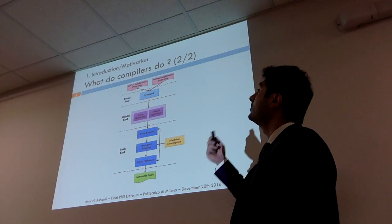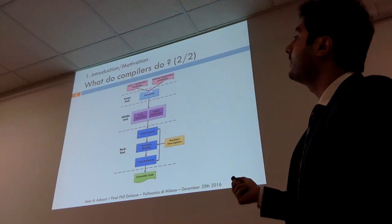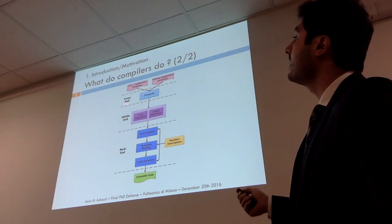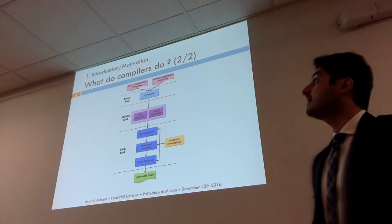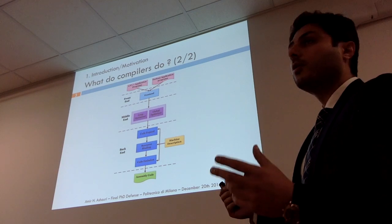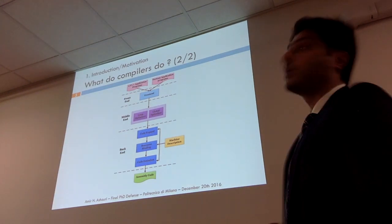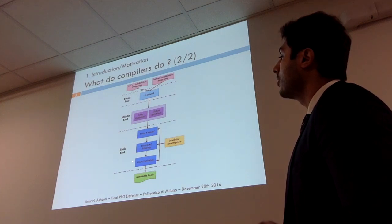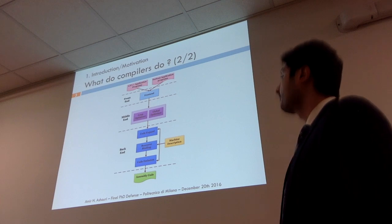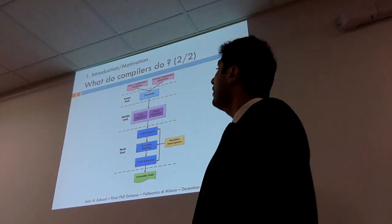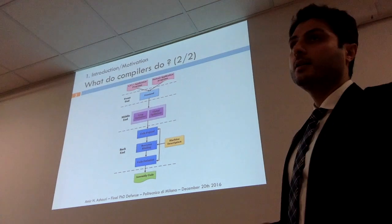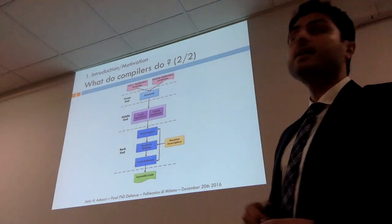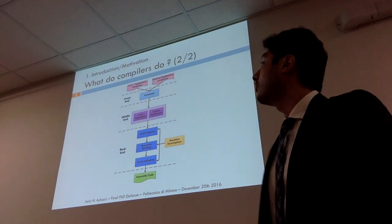If you zoom into the compiler module, we have certain layers. Starting from the top, we begin with the high-level language — C, C++, Fortran — then we go through front-end checking for syntax and semantics, then to the middle end, also called the IR, where we have optimizations. Then we go to the back end where actual code is generated, outputting assembly code. We want to stay mostly in the front end and middle end to generate better assembly code.